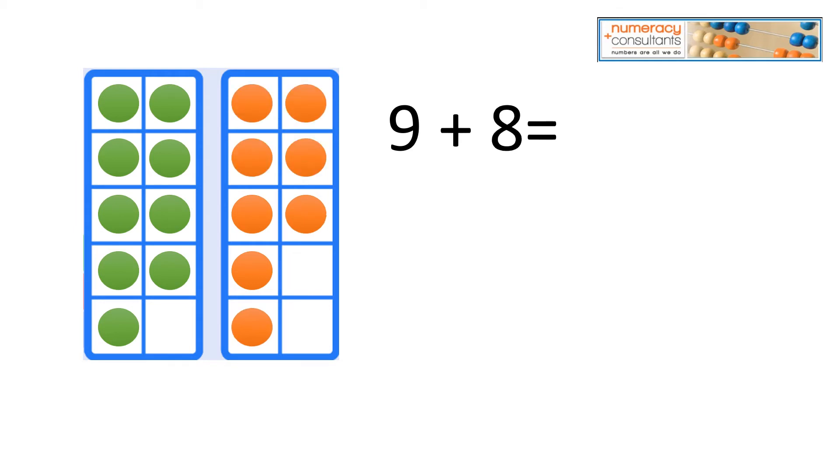Again, 9 plus 8. And all we have to do is just say, okay, we're at 9. I need one more to make 10. So I'm going to shift one over. I'm no longer dealing with 9 plus 8. I'm now dealing with 10 plus 7. It's important to understand too that as we shift one over, we go up one here and we're going down one here.